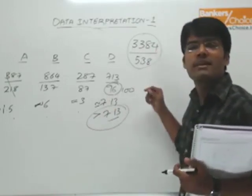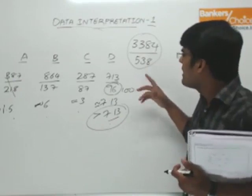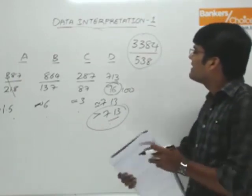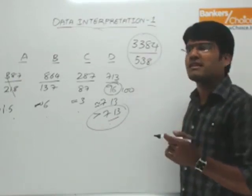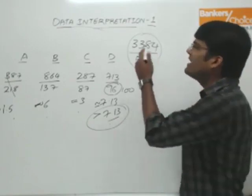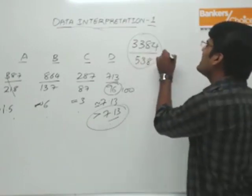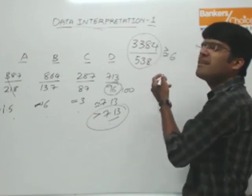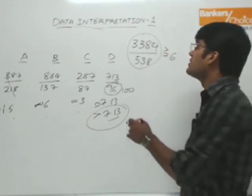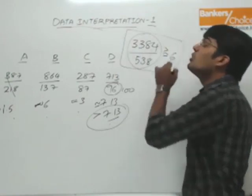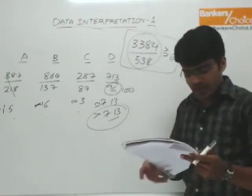Average is 3384 by 538, approximately 540. 500 into 6 is 3000, 40 into 6 is 240, so 3240 — approximately 6, or slightly more than 6. This is the average number of books issued to any one member as per the first part of the question.